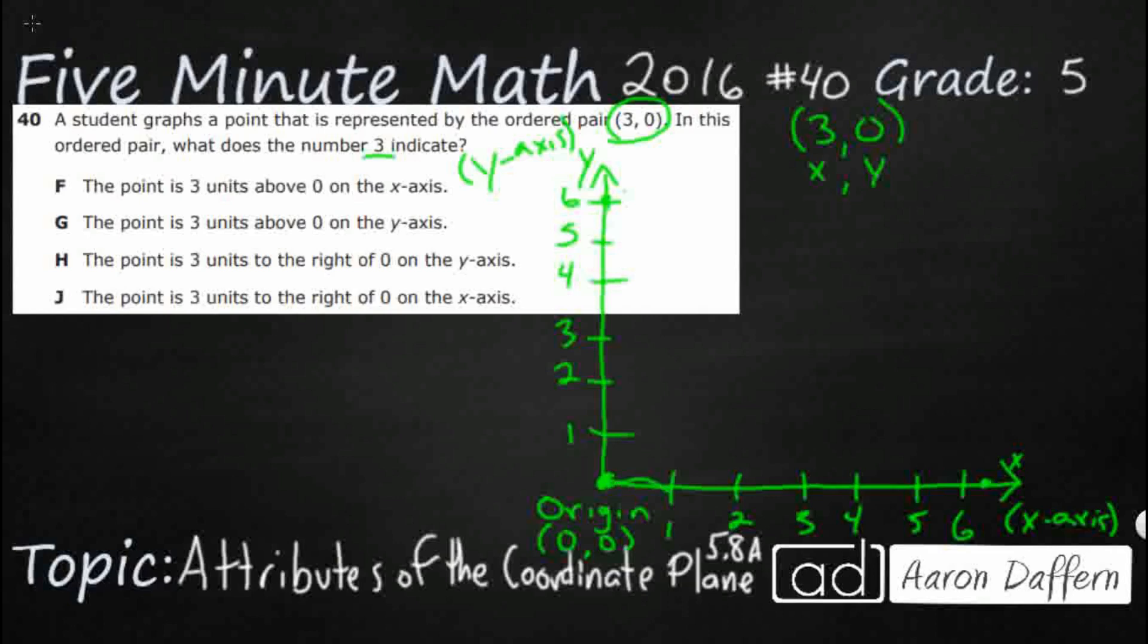So, we're going to go over 1, 2, 3. And we would move up numbers next, since we've already done our 3. But it's 0, which means we're going to stay right there on that x-axis. So, this is our point right here.